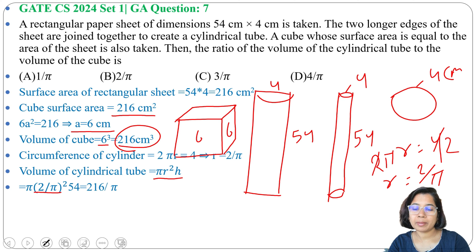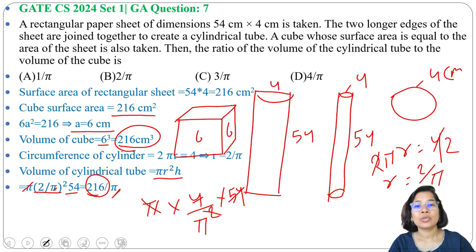r is 2 by π, so 2 by π squared, h is 54. π into 4 divided by π² into 54. So 1 π will be cancelled, 4 into 54 is 216. We got 216.